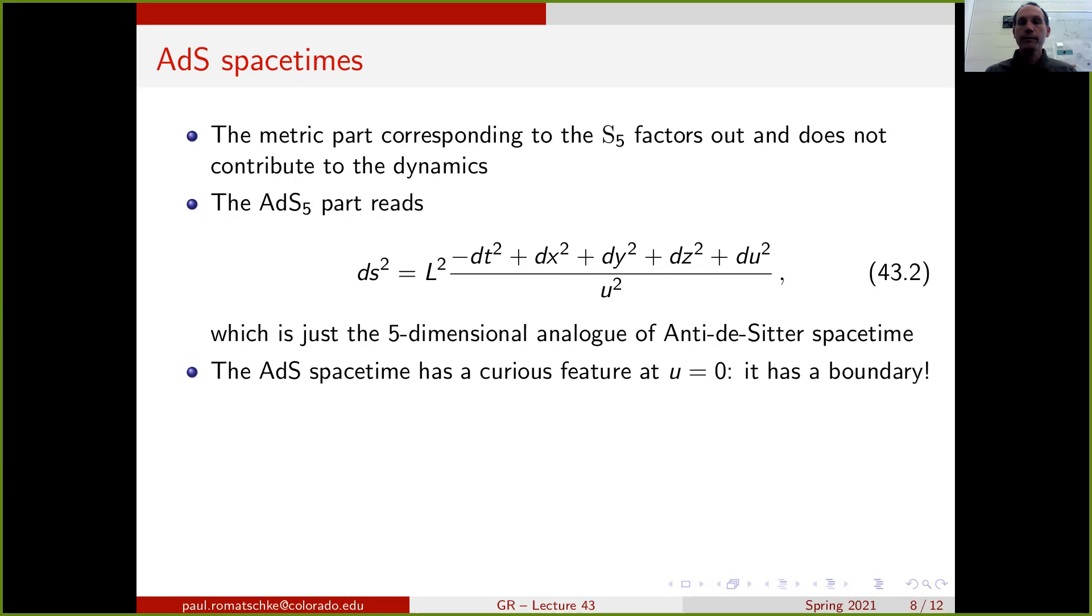Now, this AdS5 spacetime has a curious feature. If you look at the metric here, it's actually becoming singular close to u=0. And it turns out that at u=0, the singularity just means the spacetime has a boundary. So it's basically stopping to exist for negative u. We can define it to be existing only for positive values of this coordinate u, and that u=0 is a boundary.